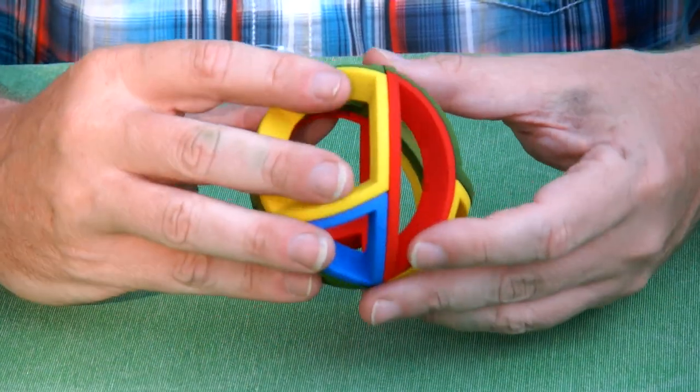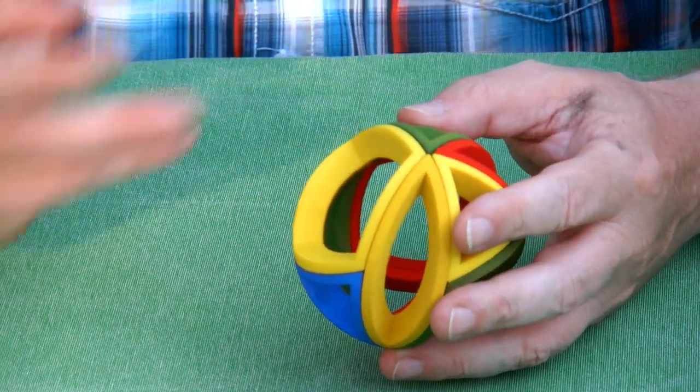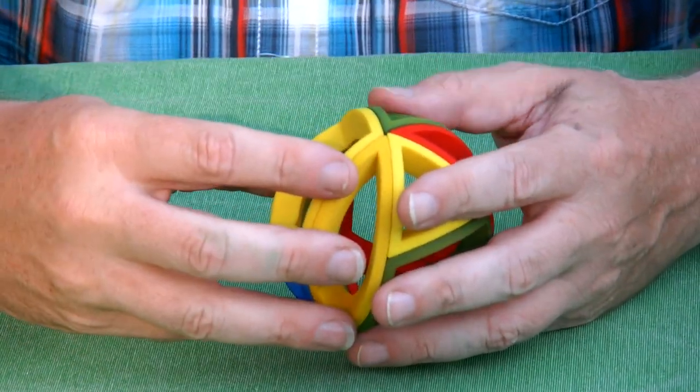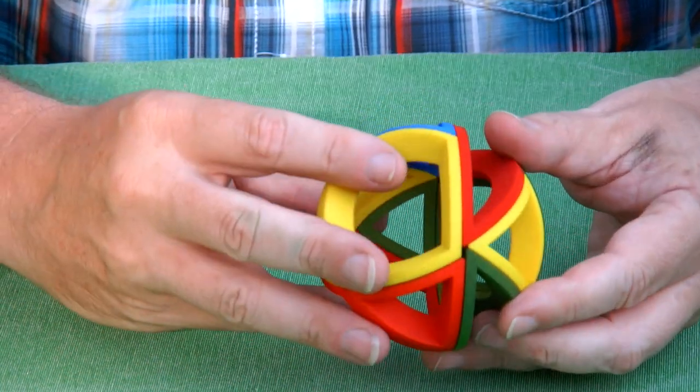We can go from symmetrical to right-handed, from right-handed to left-handed, from right-handed to symmetrical, from left-handed to symmetrical. So there are many ways that this puzzle can be scrambled.